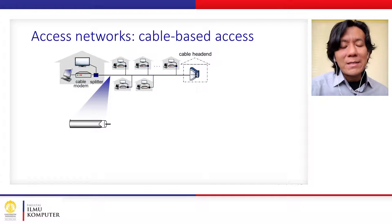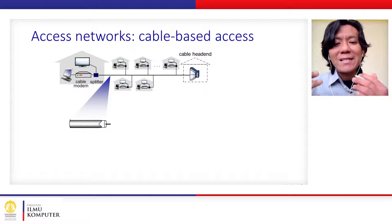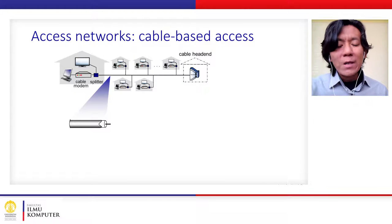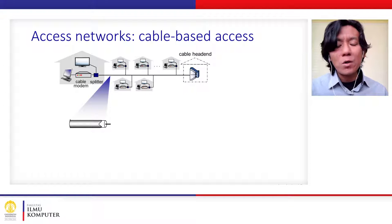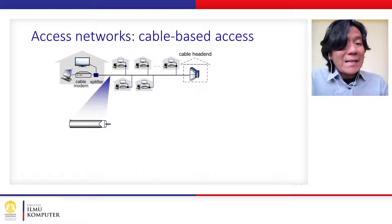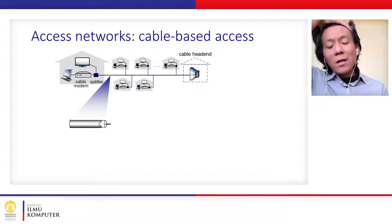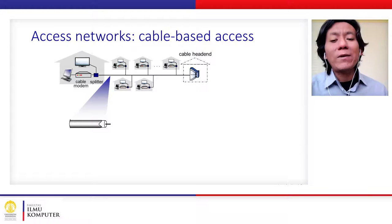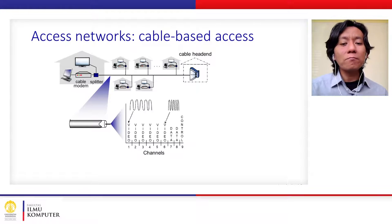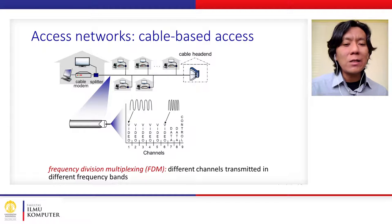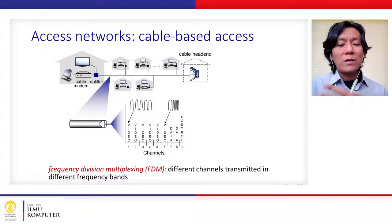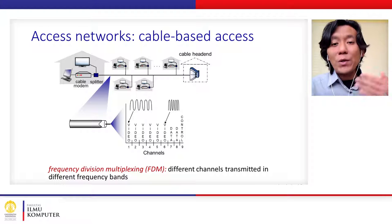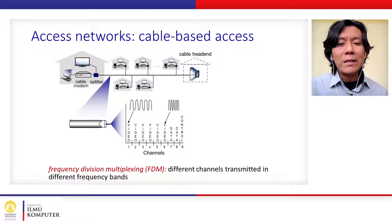Let's look at the first example: cable-based access from a residential area to the internet. This is our home — whether we use Wi-Fi within the home, we are usually connected via a particular cable to the internet service provider. Any ISP you subscribe to will provide cable access to your home from their infrastructure. This cable divides the channel using frequency division multiplexing to differentiate between channels used for sending and receiving messages.